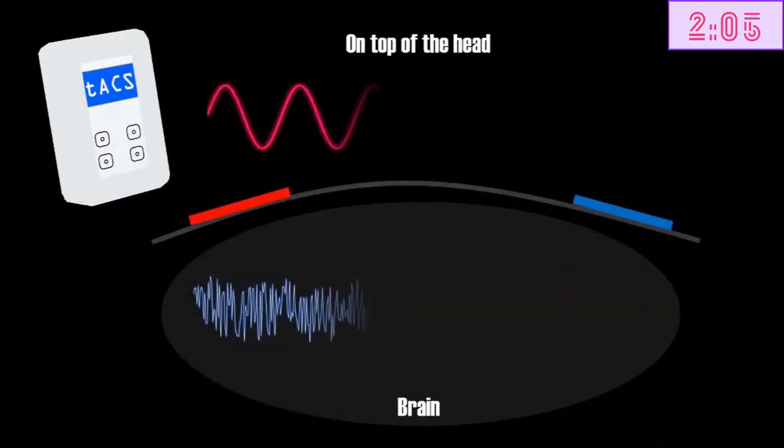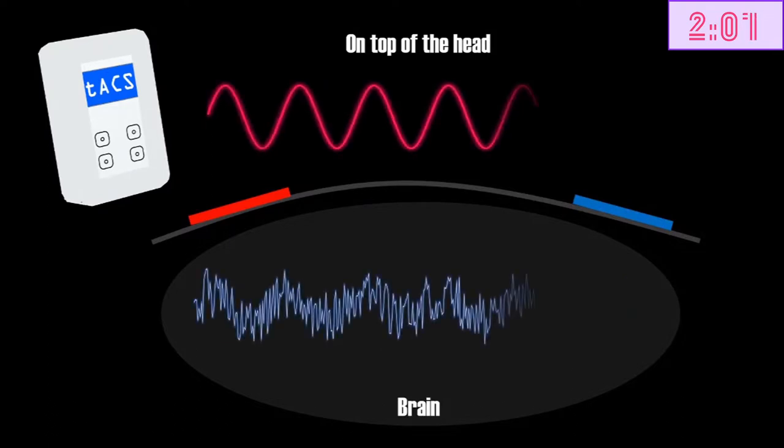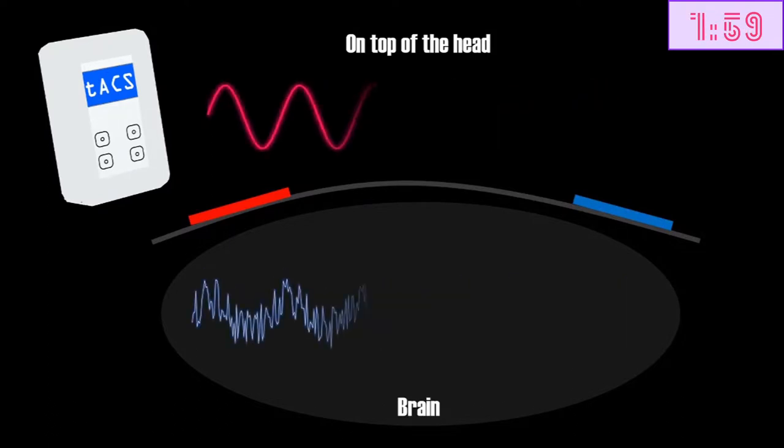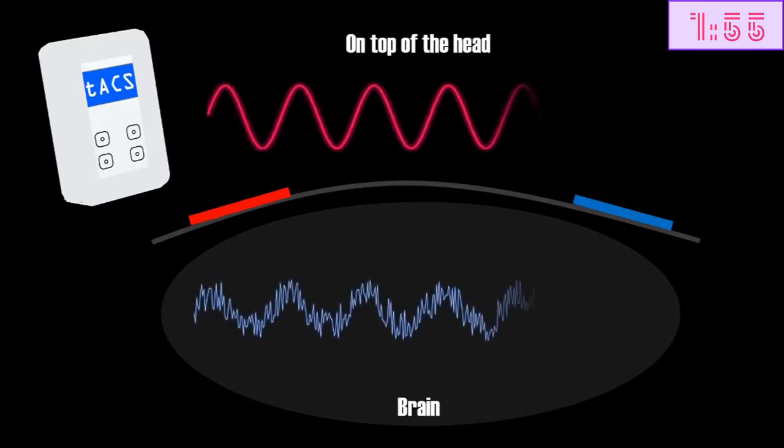So by applying an alternating current from the outside, the idea is to strengthen the brain waves in a particular region of the brain. If everything works as hypothesized, this could increase brain function.